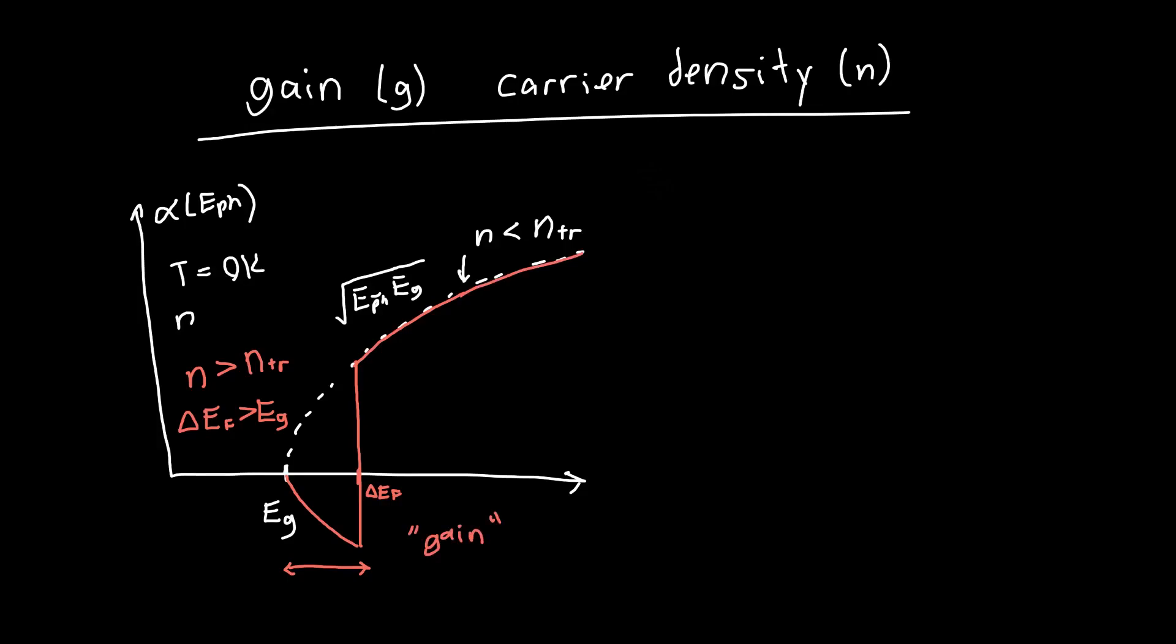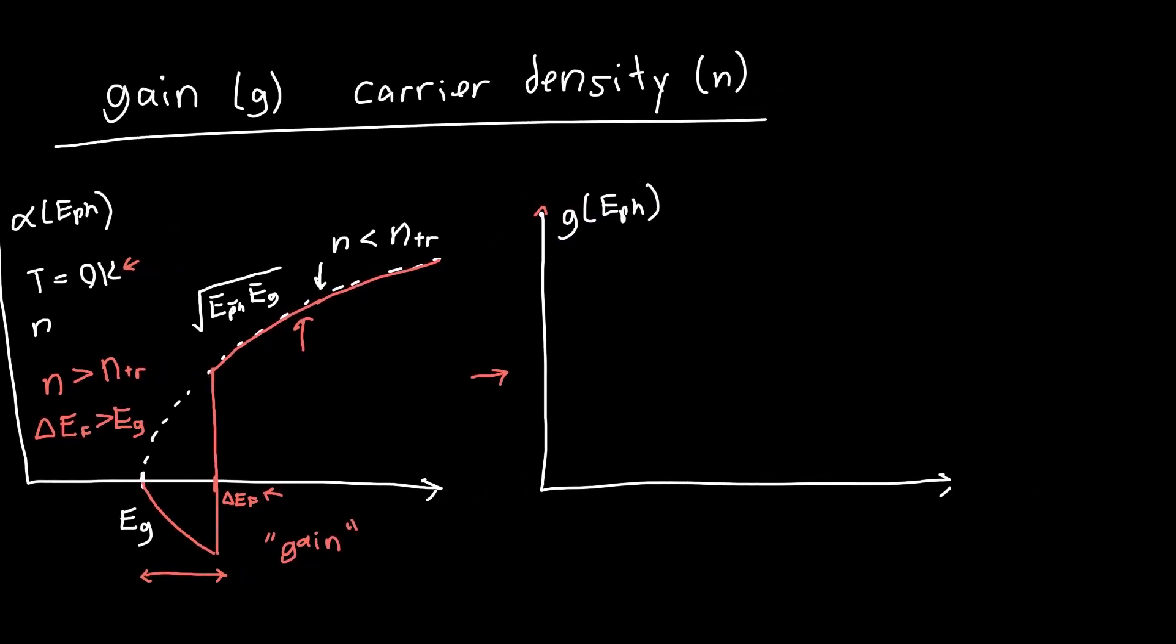And then beyond the Fermi level splitting at T equals zero Kelvin, we just get regular old absorption again. And we can redraw this curve instead of being in terms of the absorption, we can draw this gain as a function of photon energy, and that's just the negative of the absorption curve.